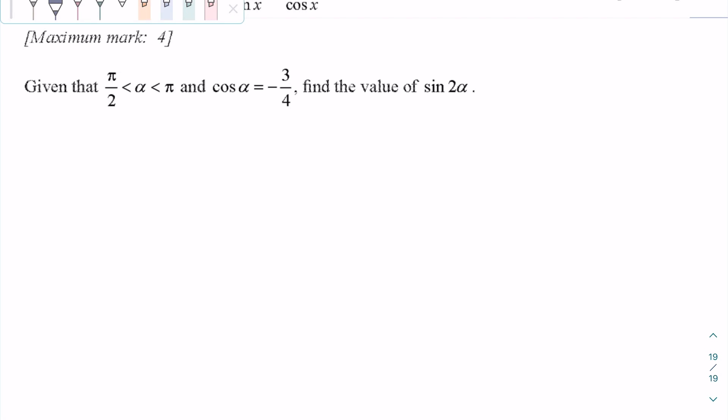Given that alpha is between pi over 2 and pi, and cosine alpha is minus three-fourths, find the value of sine 2α.